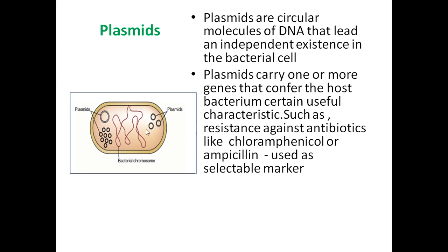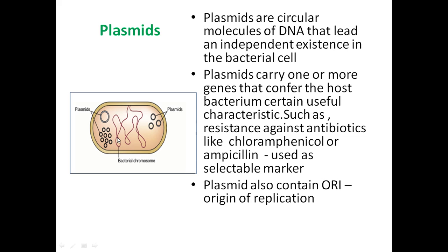A plasmid will contain a few genes, and these genes confer some characteristic properties to the host cell. For example, a plasmid may contain a particular gene which allows the host bacterial cell to tolerate certain antibiotics — that is, it gives resistance against antibiotics. The plasmid contains the gene which gives the bacteria the characteristic property of antibiotic resistance. Plasmids should also contain an ORI, or origin of replication, to be capable of replicating inside the bacterial cells.